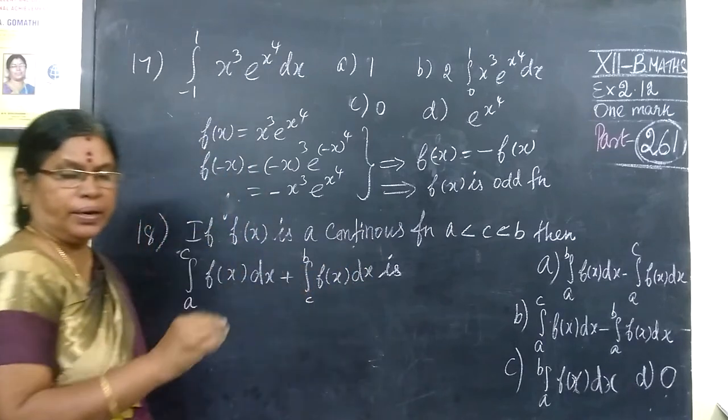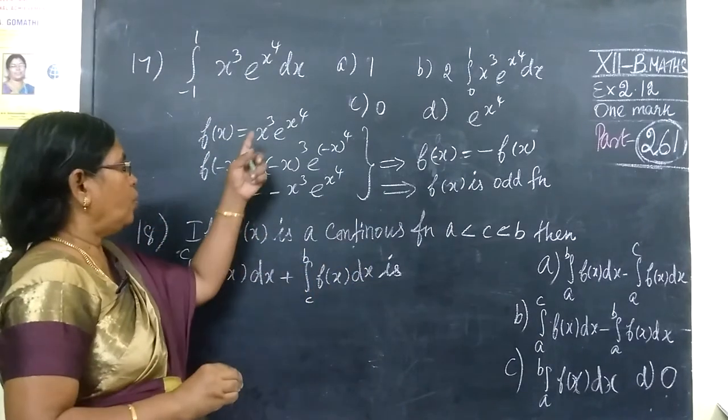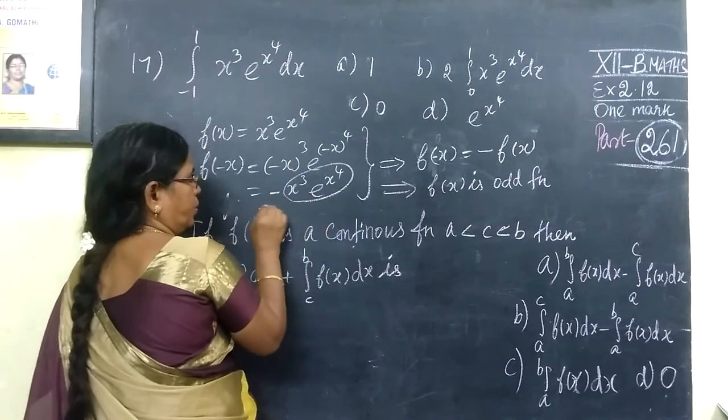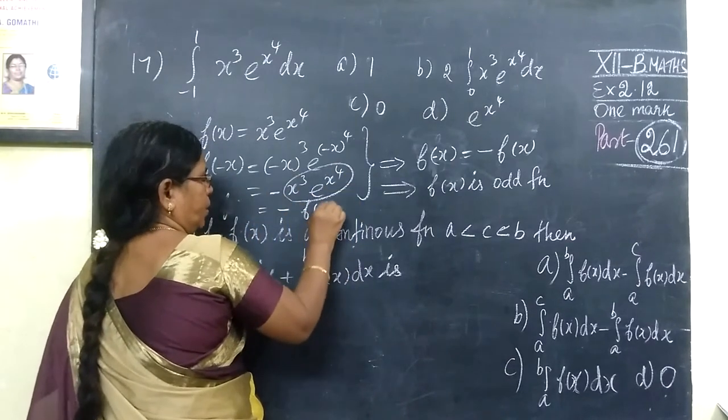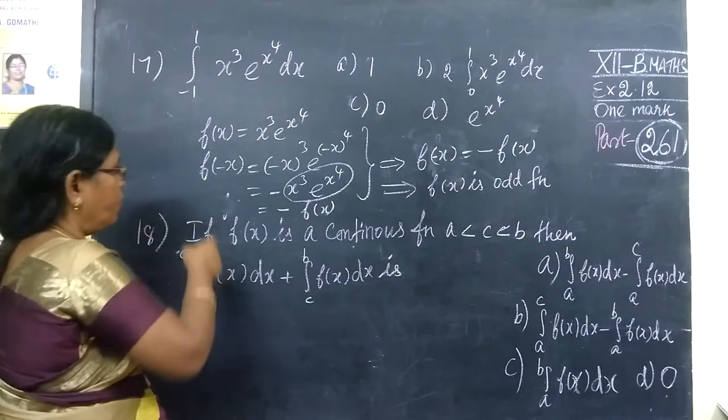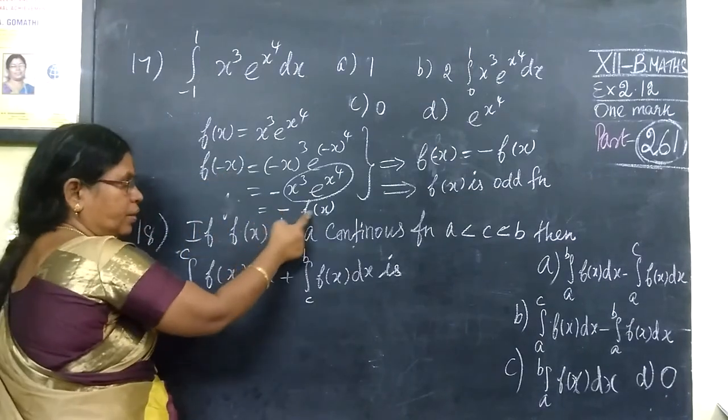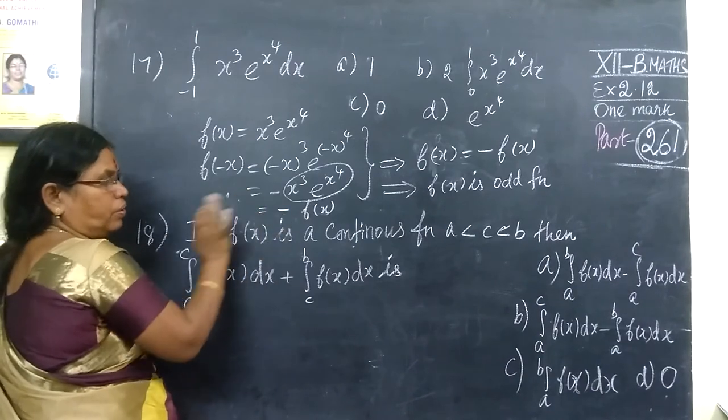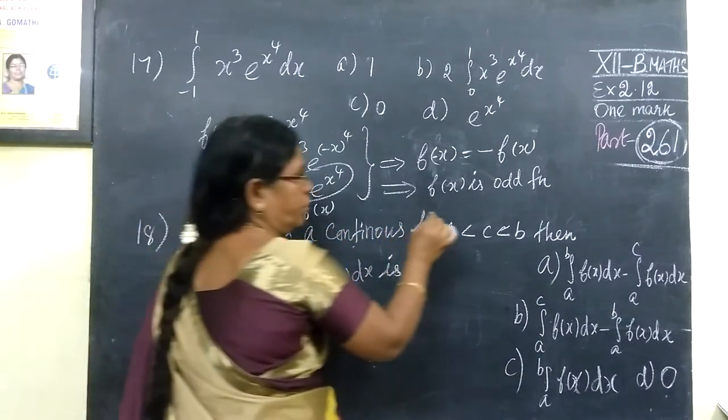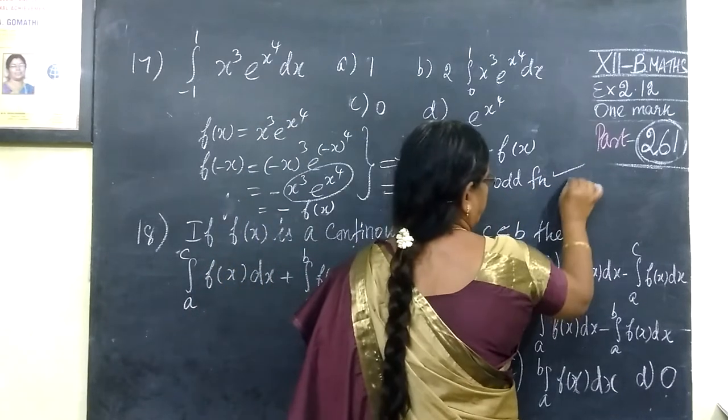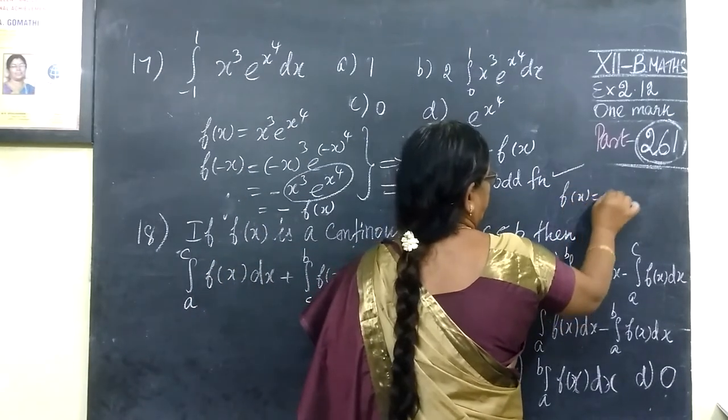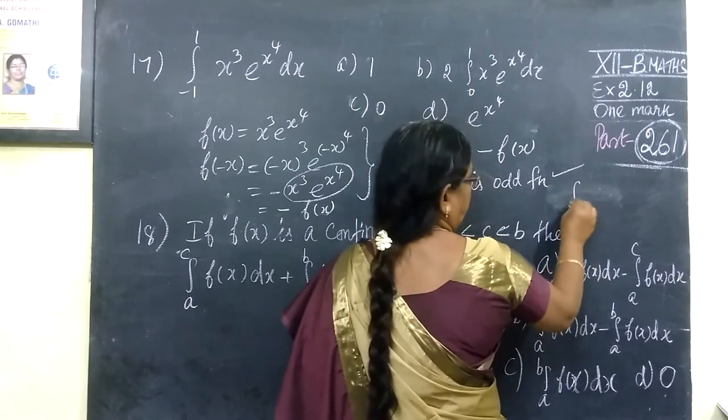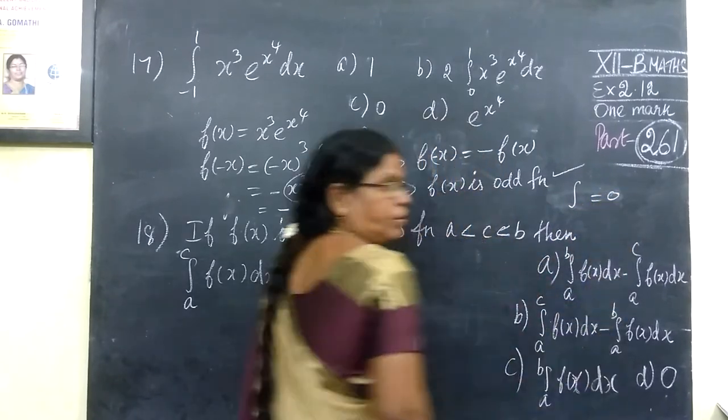When you substitute minus for x in the function, you get a minus outside. That is, minus f of x. f of minus x is equal to minus f of x. So this means when the integral limit equals zero, the answer is zero. Total integral limit is equal to 0.